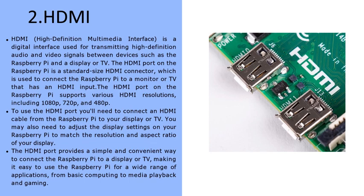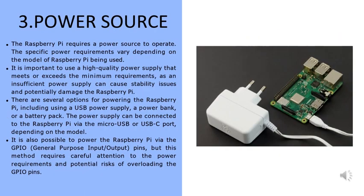To use the HDMI port, you will need to connect an HDMI cable from the Raspberry Pi to your display or TV. You may also need to adjust the display settings on your Raspberry Pi to match the resolution and aspect ratio of your display. The HDMI port provides a simple and convenient way to connect the Raspberry Pi to a display, making it easy to use for a wide range of applications from basic computing to media playback and gaming.